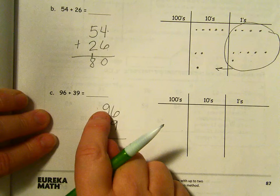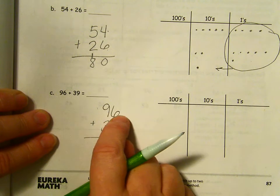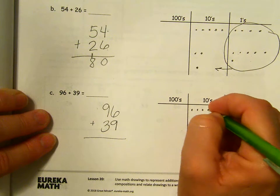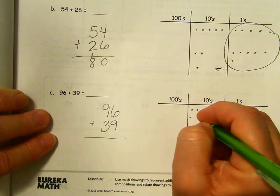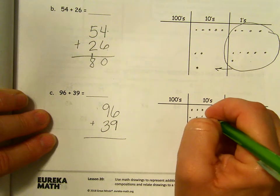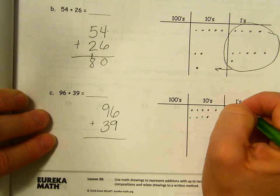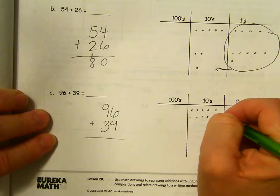And then I'm going to model that or show it in my place value chart. 96 has nine tens and six ones. So 10, 20, 30, 40, 50, 60, 70, 80, 90. And six ones. 91, 92, 93, 94, 95, 96.